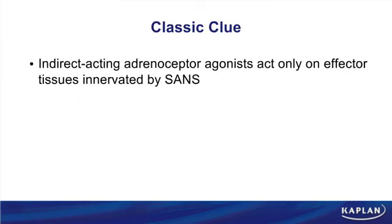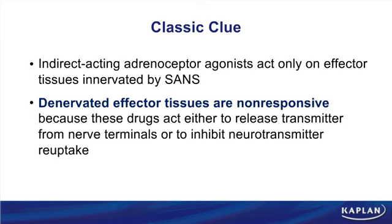Also among indirect-acting agonists are the reuptake inhibitors cocaine and TCAs, which block reuptake of norepinephrine into the presynaptic nerve, increasing NE in the synapse and explaining their stimulant-like effects. Importantly, indirect-acting agonists only work on innervated tissues. If the adrenergic nerve is absent — or if you're dealing with a non-innervated receptor like most beta-2s — none of these indirect agonists will have an effect on that tissue.